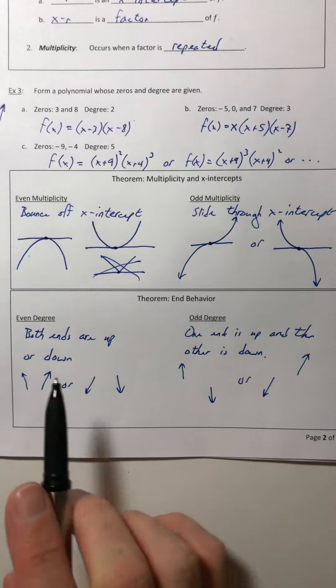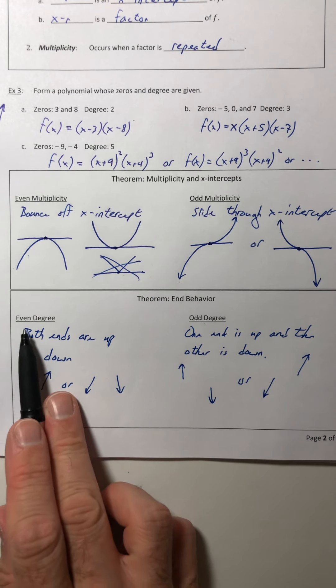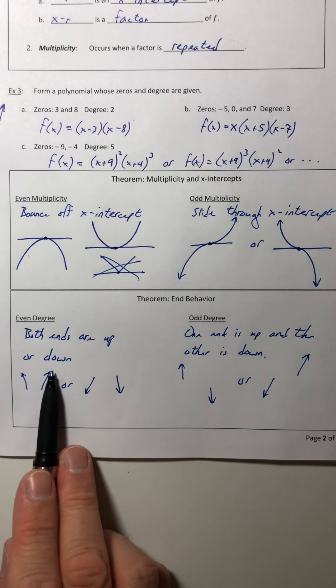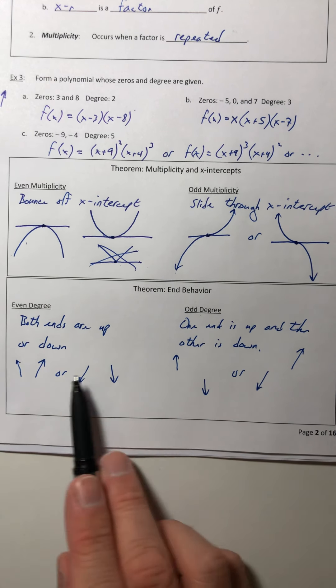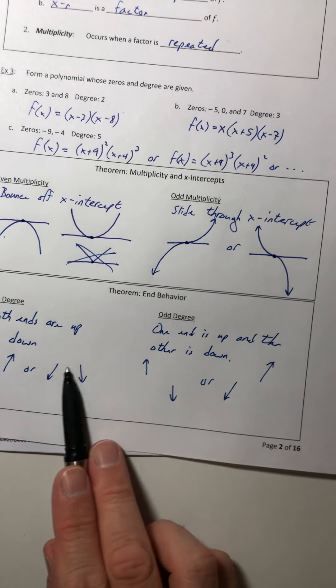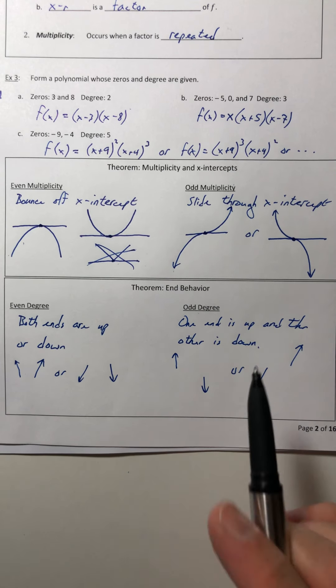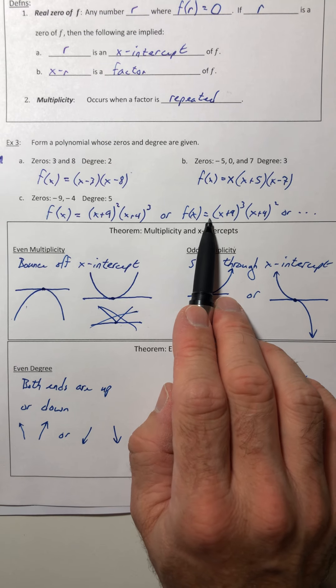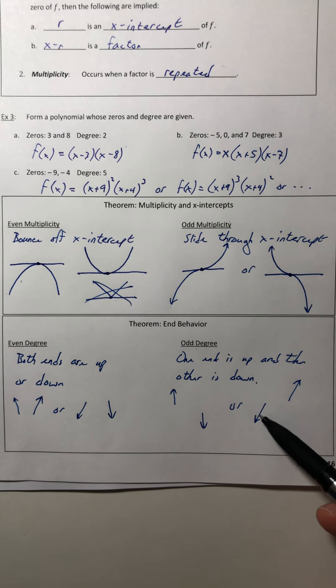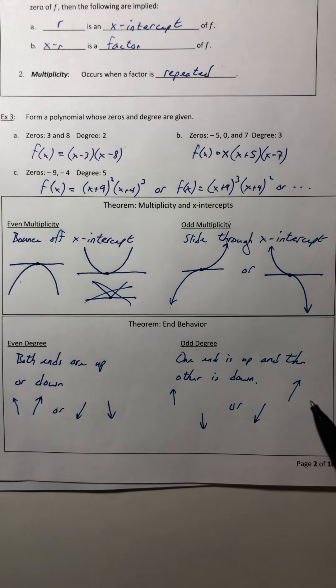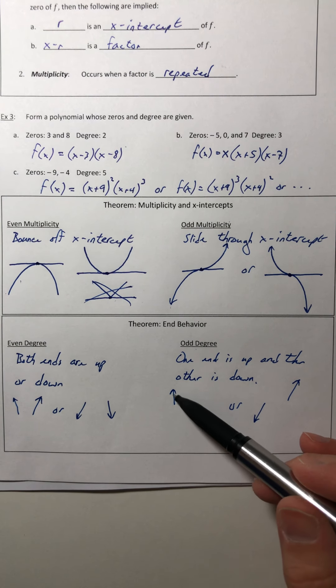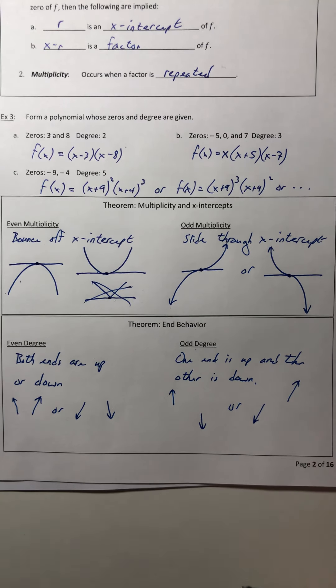It'll also depend on the sign. So let's get into that because I forgot. If it's a positive in front of the even degree, both ends are up. If it's a negative, both ends would be down. For the odd degree, if it's a positive all the way out in front, so like it's a positive way out in front of all of your factors, the left side's down, the right side's up. And then if it's got a negative in front of everything, the left end is up and the right side is going down.